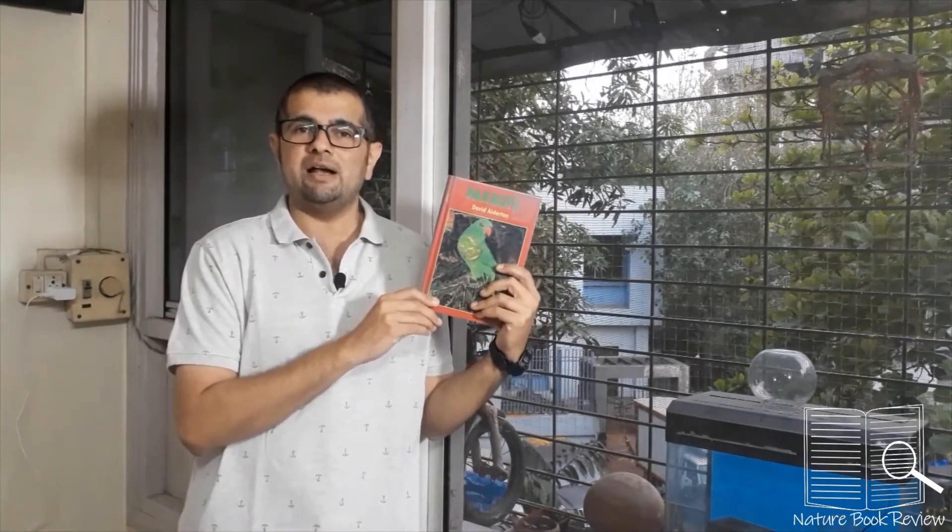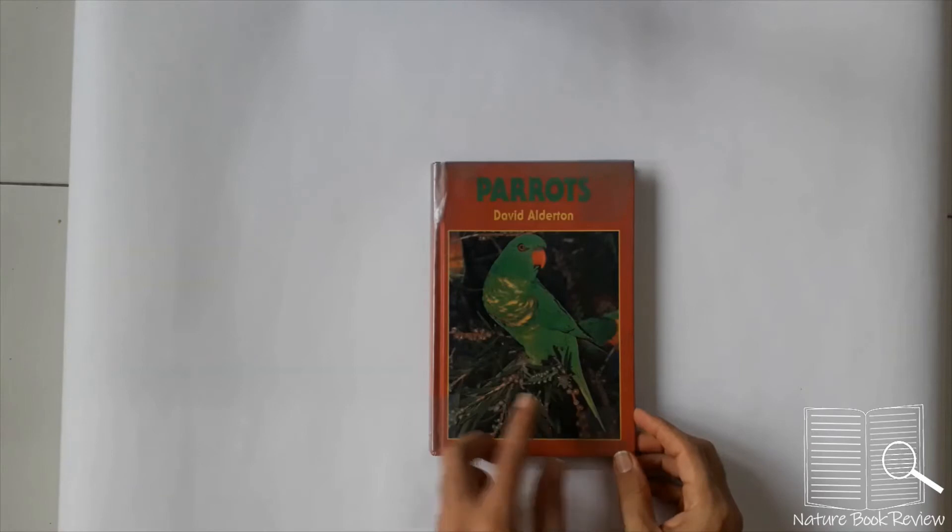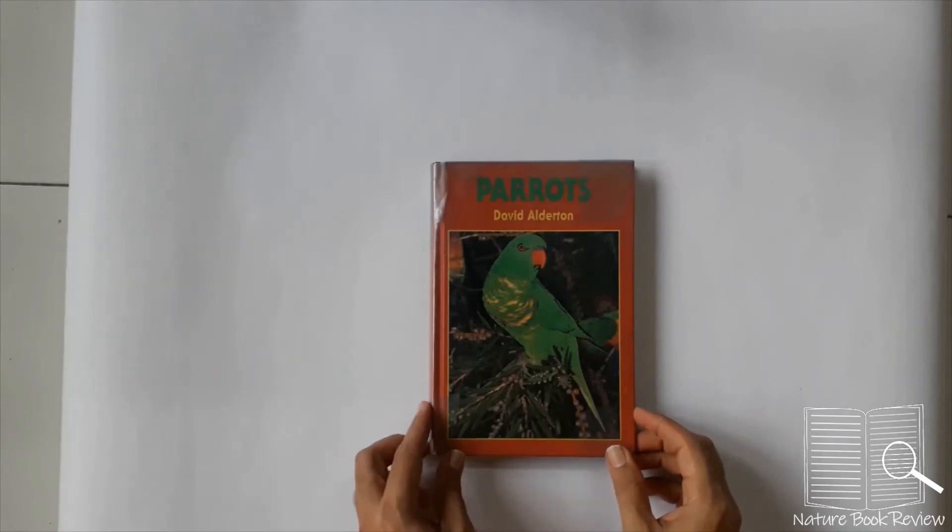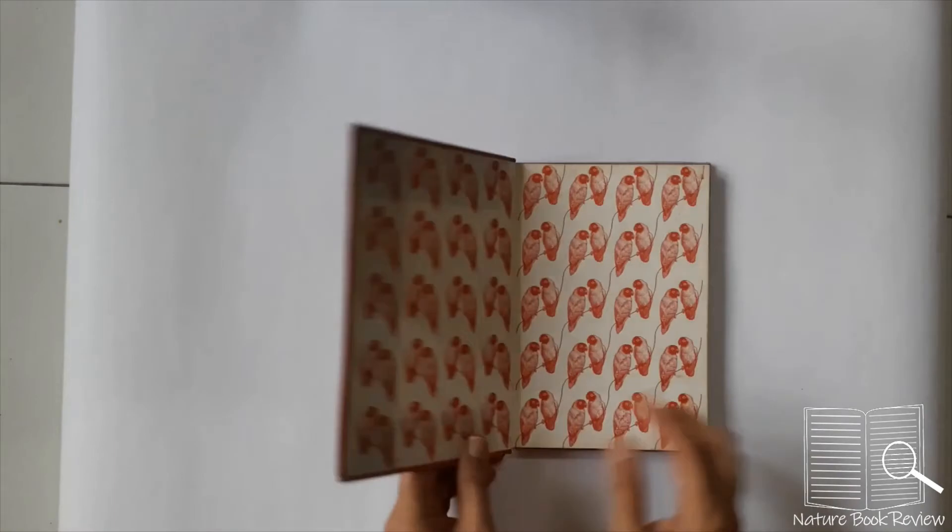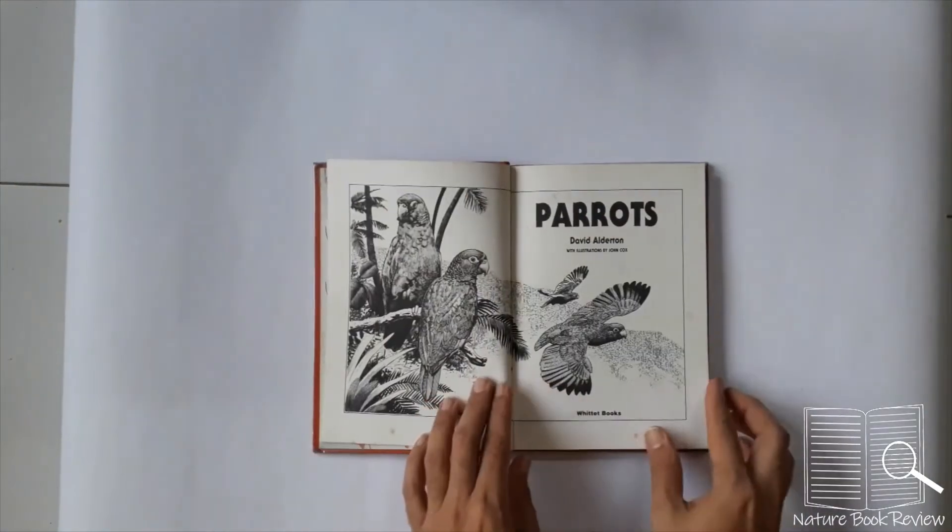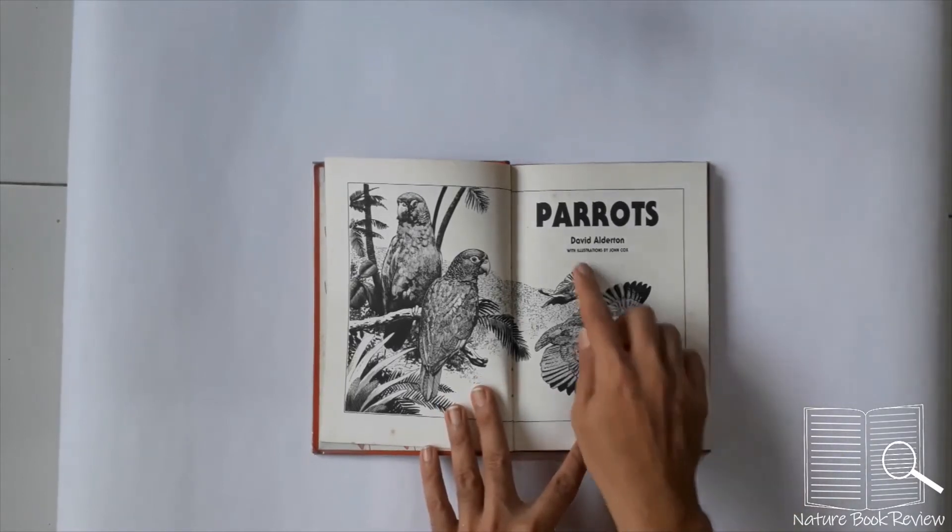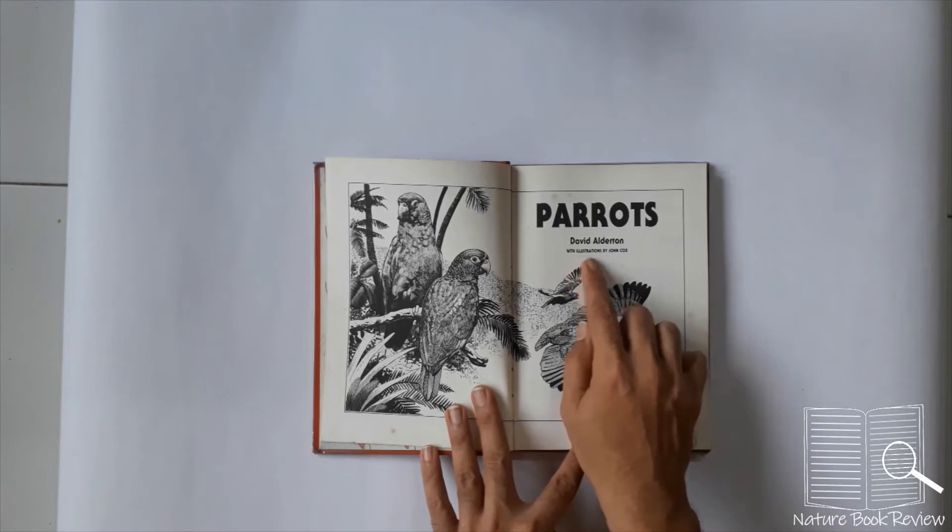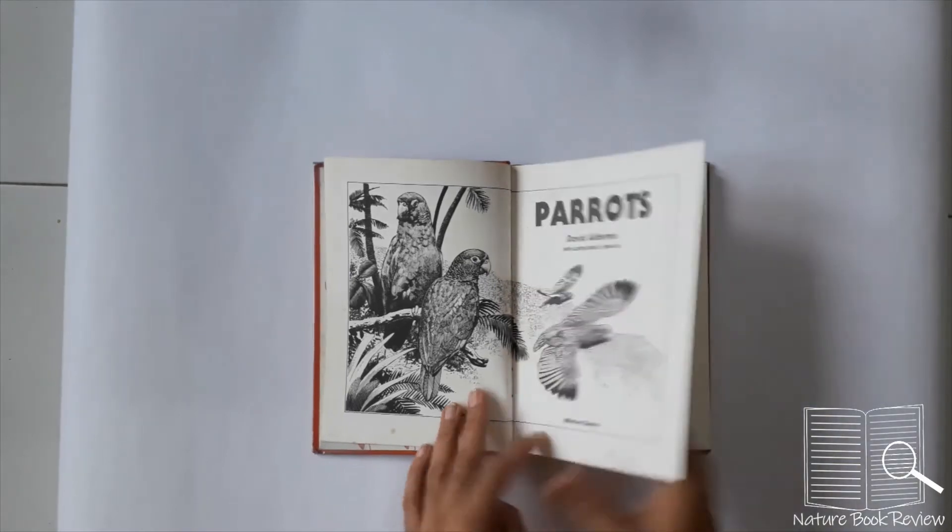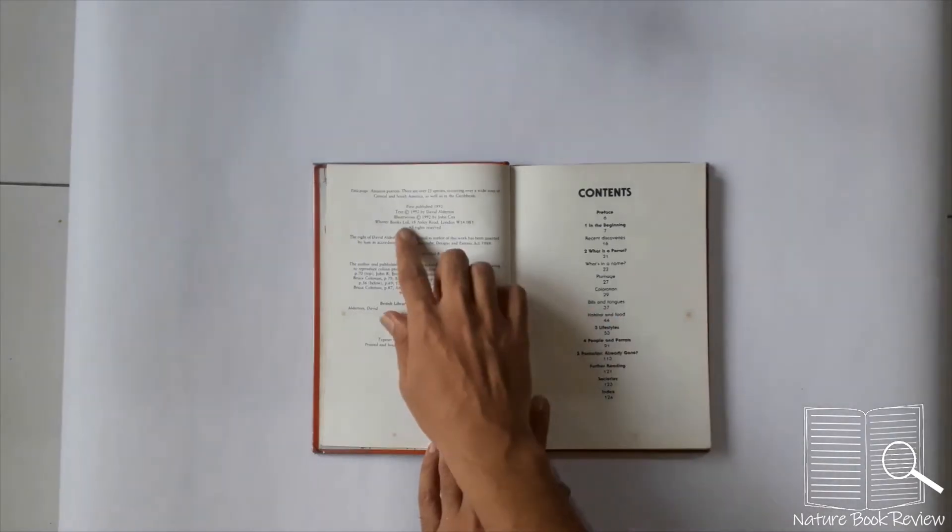Parrots by David Alderton. You can see there is an Amazon parrot on the front page. Let's go through the book. It is a Whittet Books publication with illustrations by John Cox. First published in 1992, Whittet Books Limited.